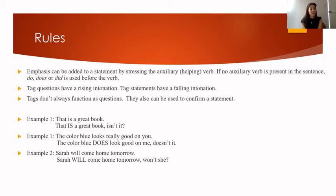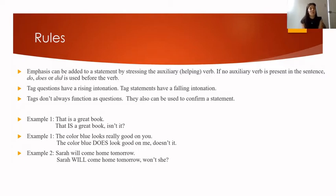Example number three. 'Sarah will come home tomorrow,' or 'Sarah is coming home tomorrow.' Response: 'Sarah will come home tomorrow, won't she?' Or: 'Sarah is coming home tomorrow, isn't she?' These are two different ways of expressing the future using tag statements.